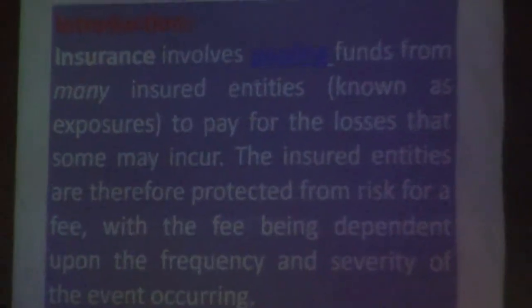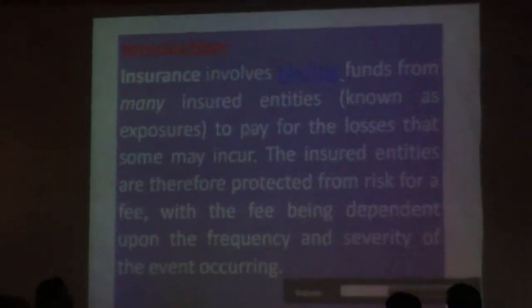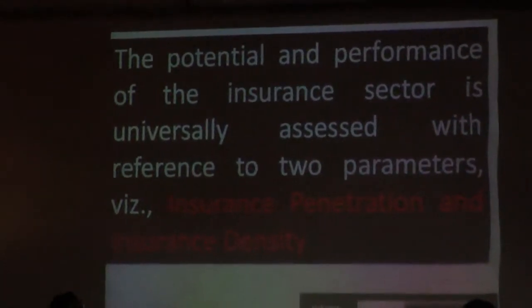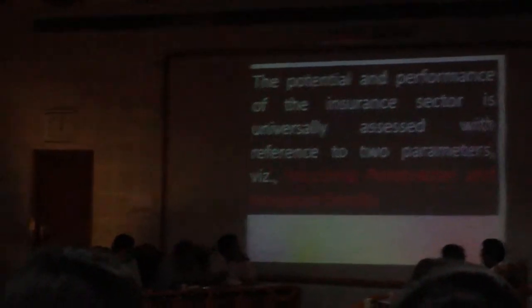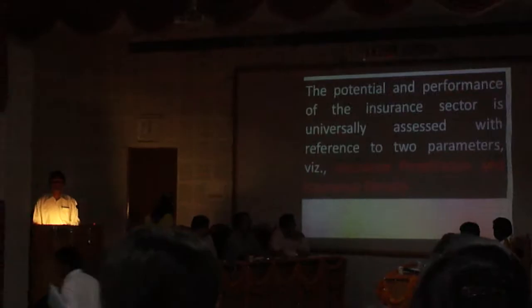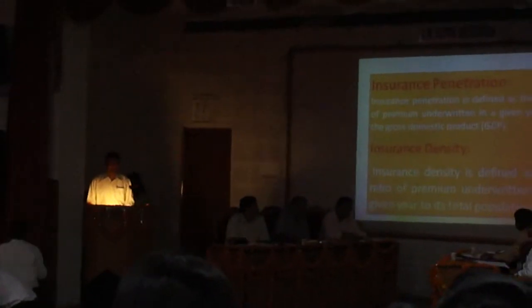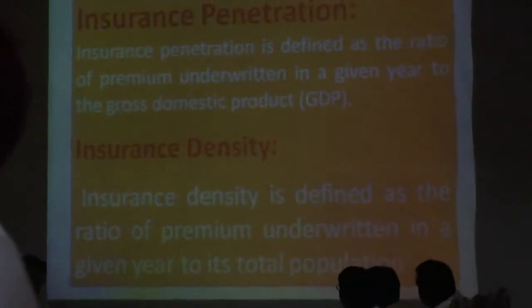What is Insurance? The main major performance parameters of the Insurance Industry are two: Insurance Penetration and Insurance Density. Insurance Penetration is defined as the ratio of premium underwritten in a given year to the Gross Domestic Product (GDP). Insurance Density is the insurance premium underwritten with the total population of the nation.